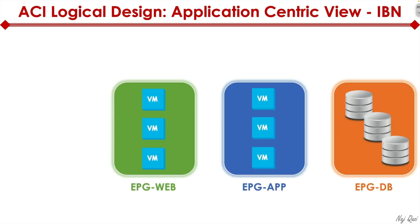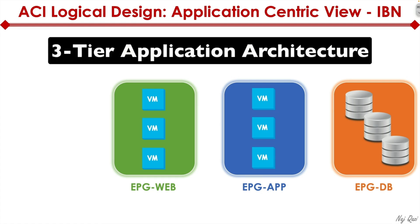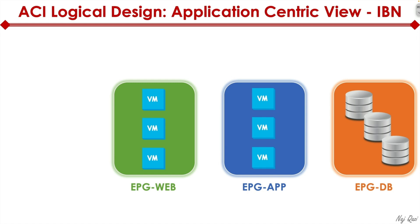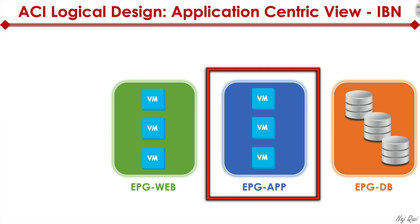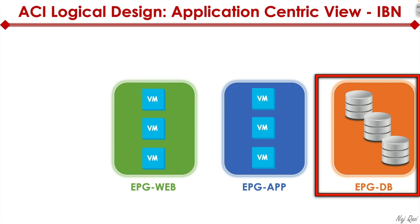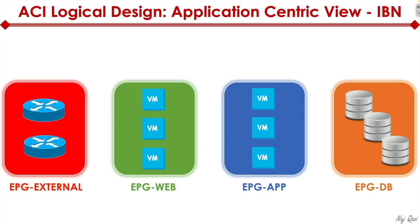To help understand ACI logical constructs, think of a typical web application — a three-tier application architecture, not to be confused with the three-tier network architecture. A typical web application has a web tier that users connect to. Then there's an app tier — anything dynamic. For example, going to google.com presents the web interface, but going to Gmail brings in dynamic elements through the app tier. The third tier is the database tier, where all information is stored — email profiles, email data, and so on.